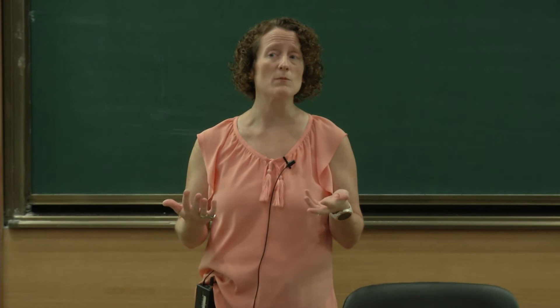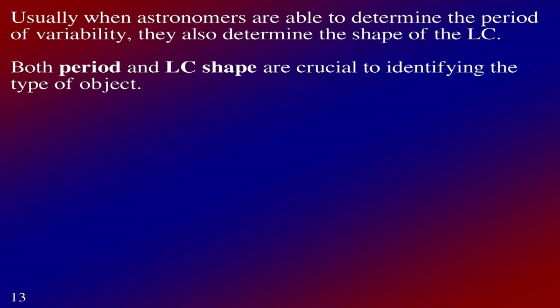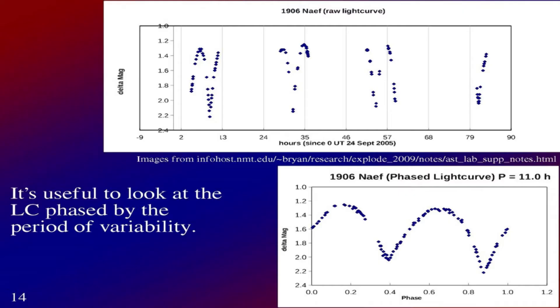Now we're going to think about how to analyze this periodicity and figure out the periods of light curves. Usually when astronomers determine the period of variability, they also determine the shape of the light curve — those usually go hand in hand. Both the period and the light curve shape are crucial to identifying the type of object. One useful thing to do is to look at the light curve phased by the period of variability. A lot of the previous plots you were looking at didn't have a strict time axis — some were phased.